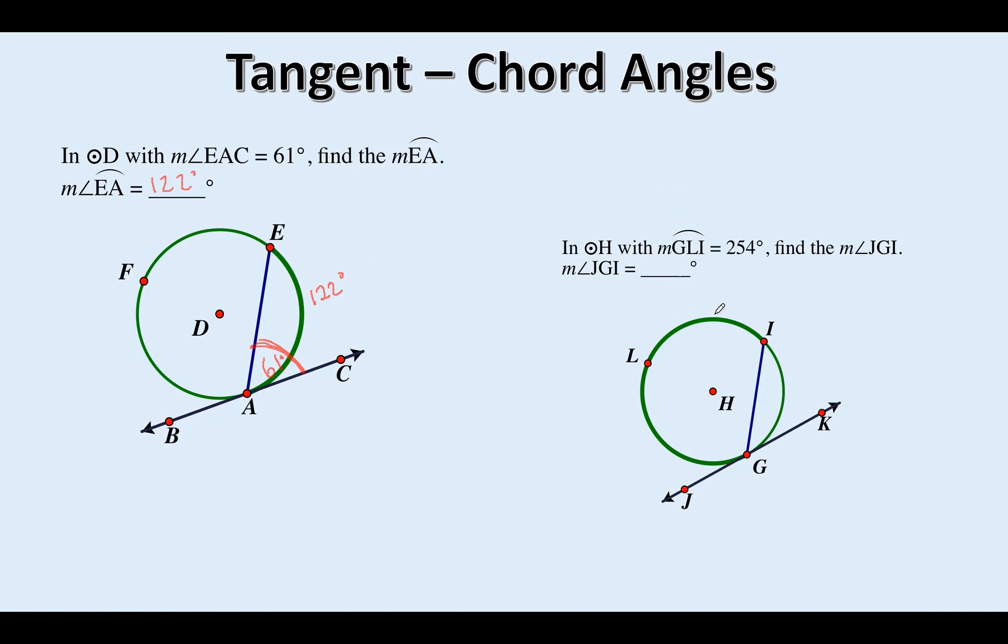This one over here, GLI. We're using three letters, so we're talking about a major arc. That arc is 254 degrees. Starting with the arc, now find the angle, angle JGI. Here's angle JGI, that's the angle that the arc is inside of. So that's going to be half of that arc. So that makes this 127 degrees.